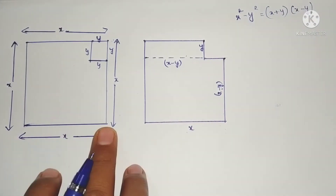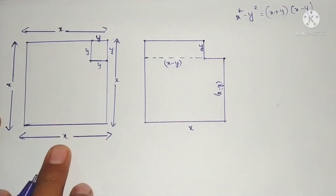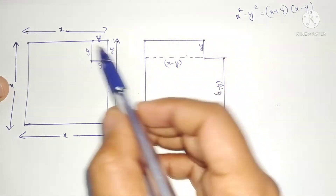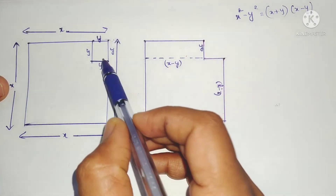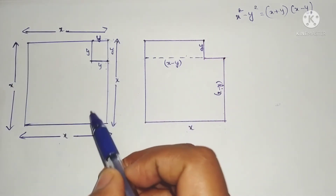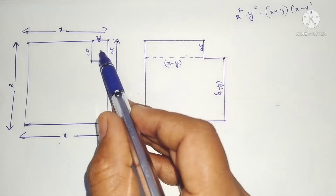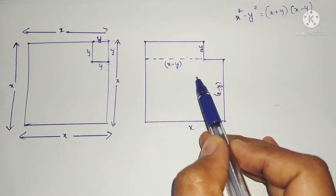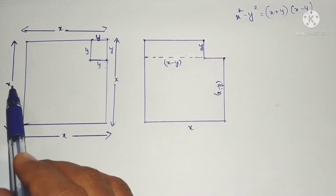For that, I draw a square of side x units. After that, I am taking away a square of y units from this. So from the x-unit square, I am taking away the y-unit square, and after taking away, this square becomes like this.